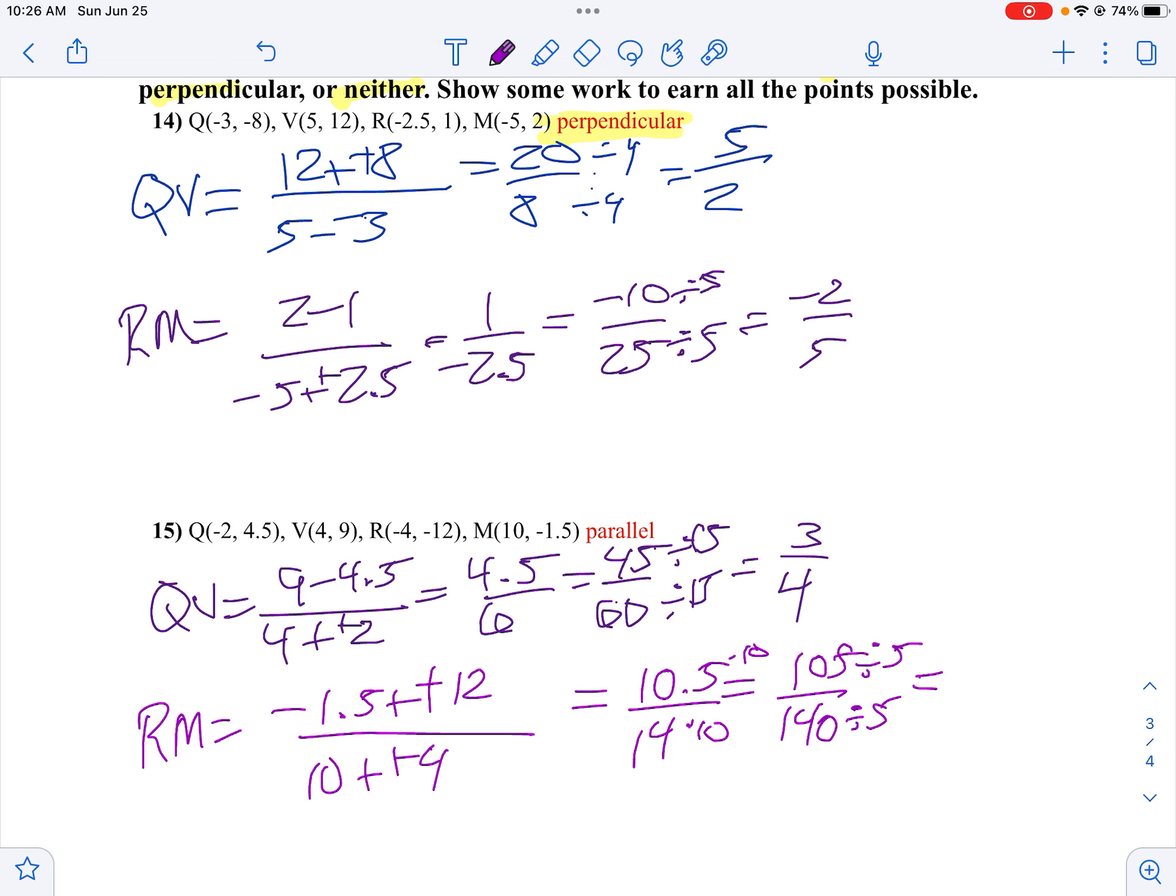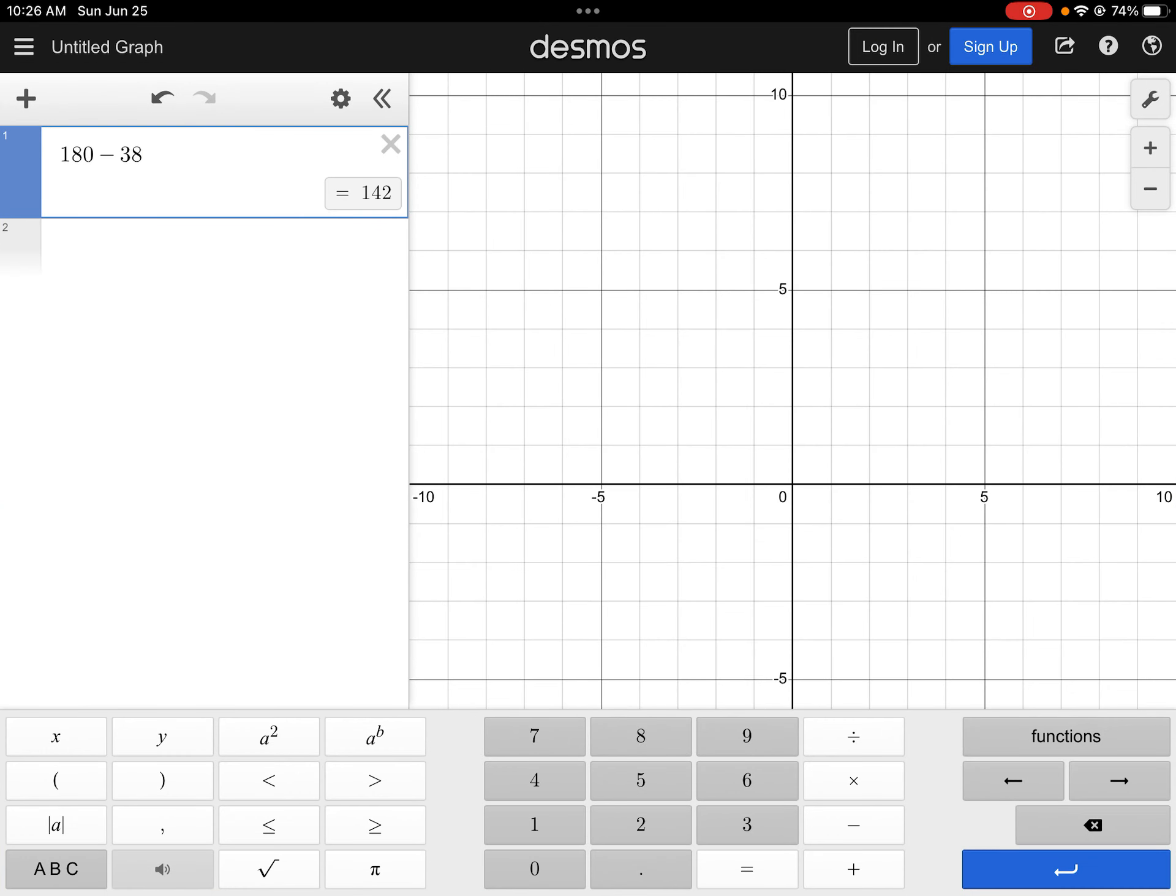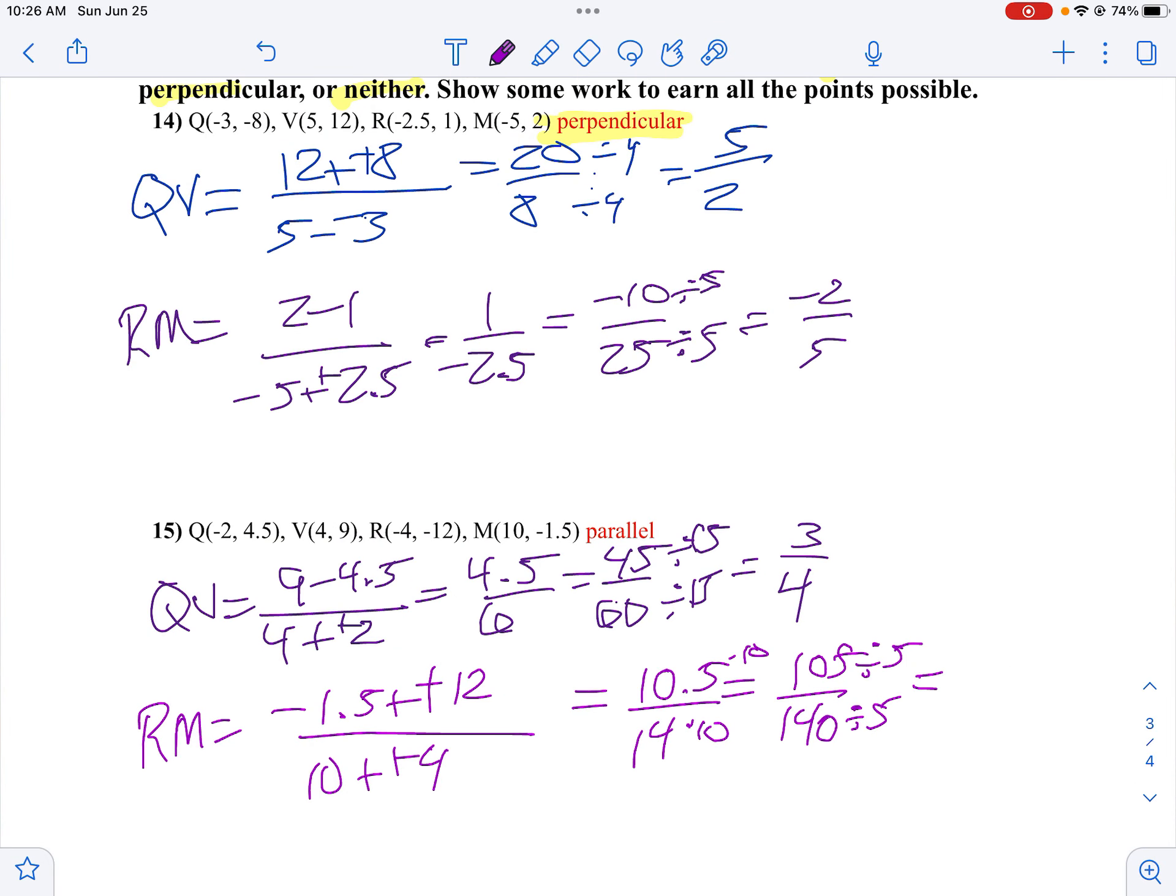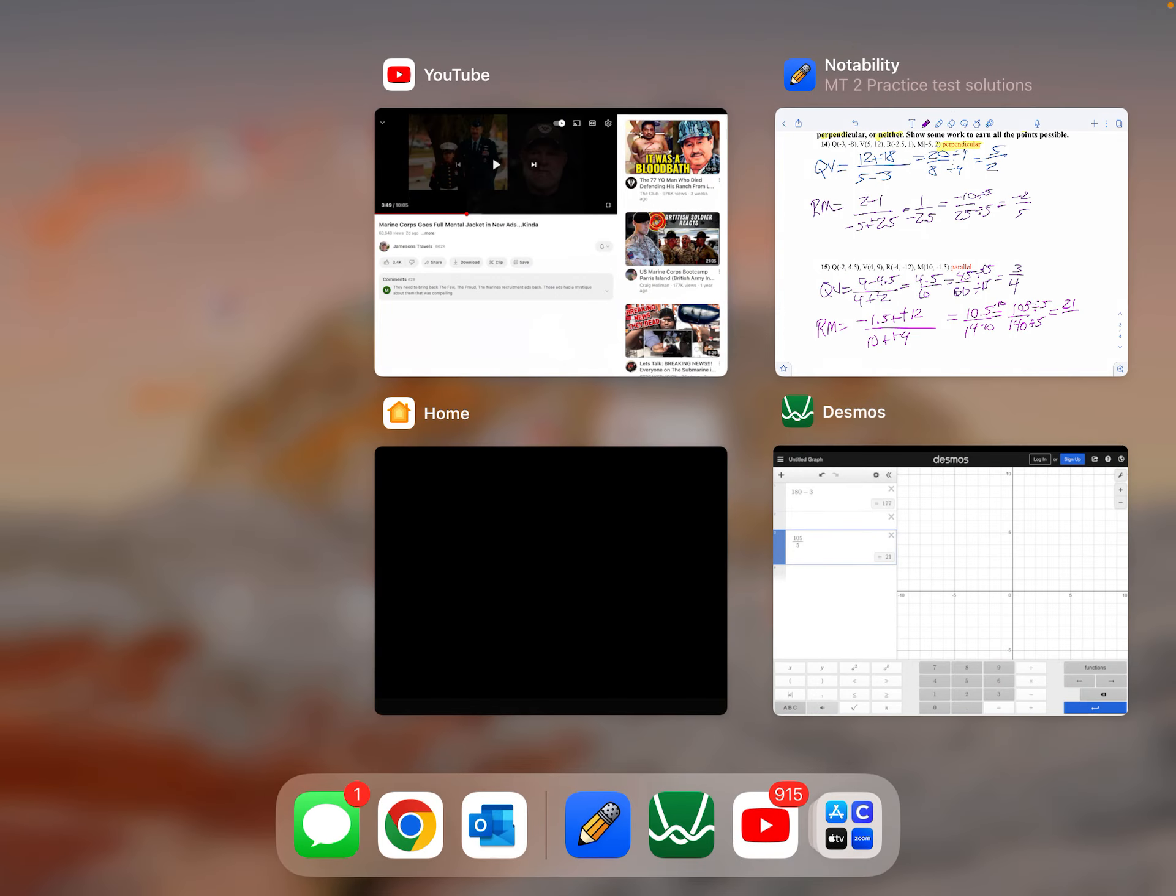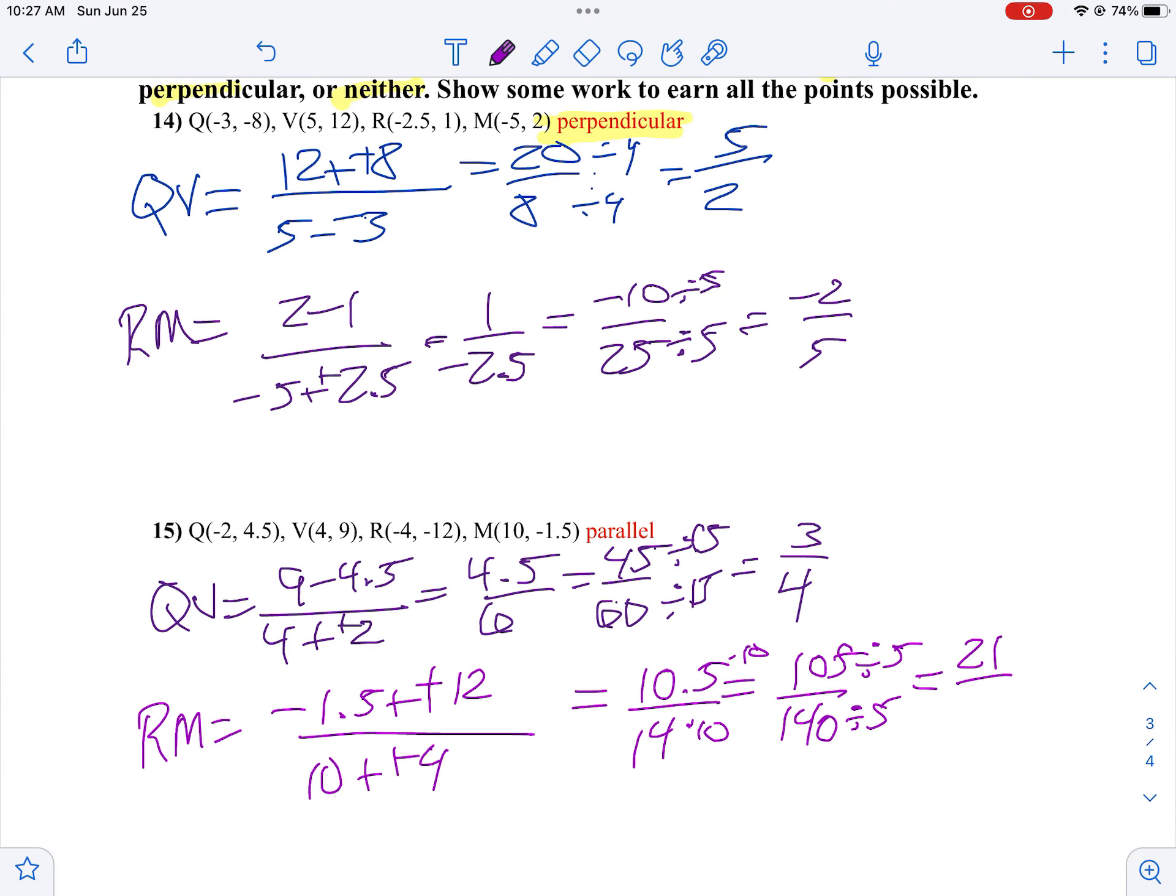I might have to reduce this twice. So I take 105 and divide that by 5. 105 divided by 5 gives me 21. 140 divided by 5, and I get 28. So I get 21 over 28.